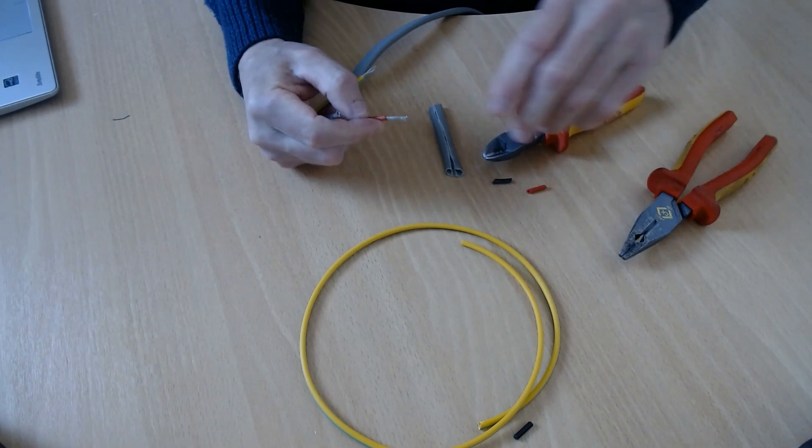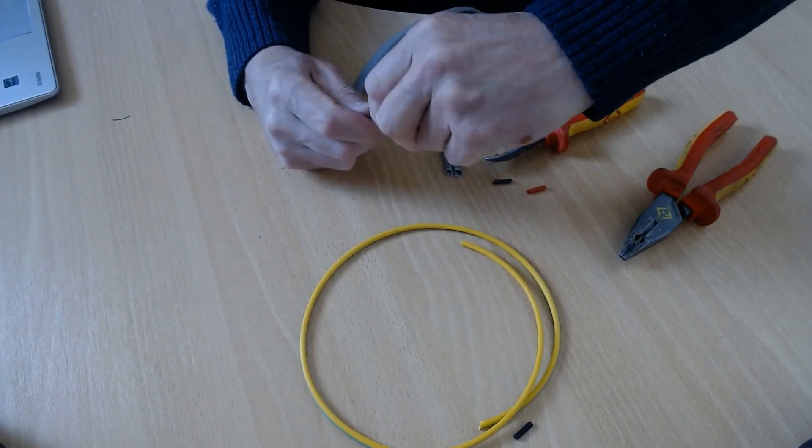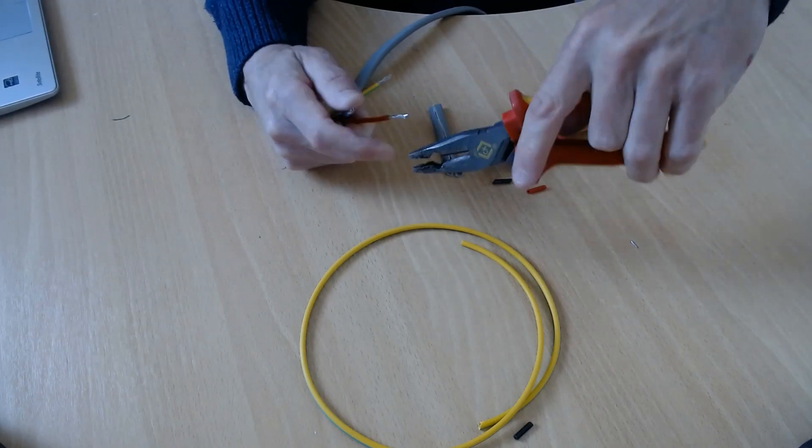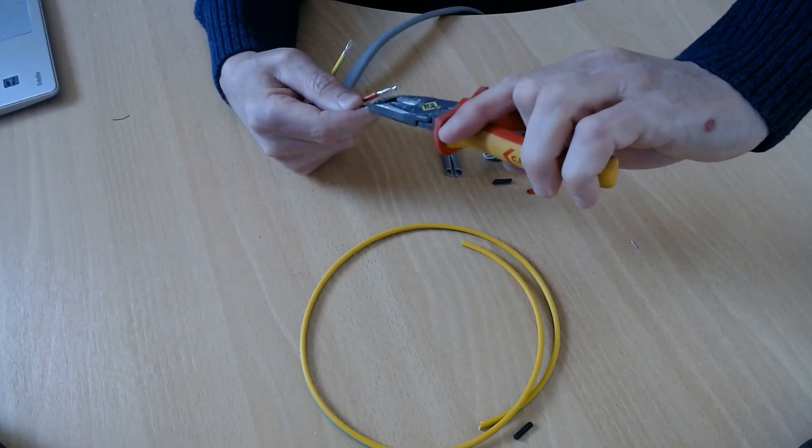Put it on the neutral, like that. Twist them. If you're not able to twist them with your fingers, you can use your pliers and just twist them. You don't have to be too twisted.